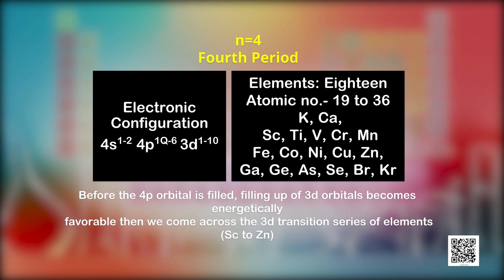The fourth period starts at potassium (atomic number 19, configuration 4s¹). Before the 4p orbital is filled, filling of the 3d orbital becomes energetically favorable according to the Aufbau principle, giving rise to the 3d transition series. The transition series starts from scandium (atomic number 21, configuration 3d¹4s²) and ends at zinc (atomic number 30, configuration 3d¹⁰4s²). The fourth period ends at krypton (atomic number 36) with the filling of 4p orbitals. In the fourth period, nine orbitals are filled — one 4s, five 3d, and three 4p — giving altogether 18 elements.